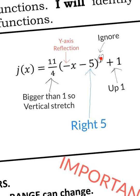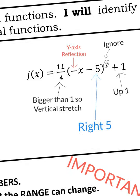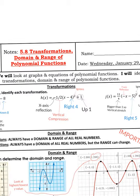And then this power is the 7th power, but that's okay. It doesn't affect the transformation. What does affect the transformation is this 11 over 4. That's bigger than 1, so that's going to vertically stretch it. A negative on the inside is a y-axis reflection. Negative is on the outside, x-axis reflection. So minus 5 made it go right 5, and then plus 1 made it go up 1. And those are my examples of transformations.